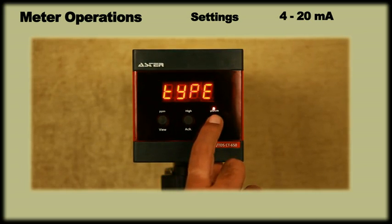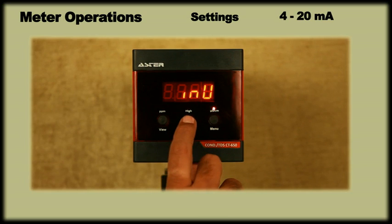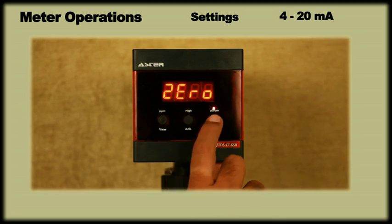On pressing menu, display will show type. On pressing menu again, we can choose the type as either normal that is 4 to 20 or inverse that is 20 to 4 using the ACK key. Then press menu to save and set the zero value.